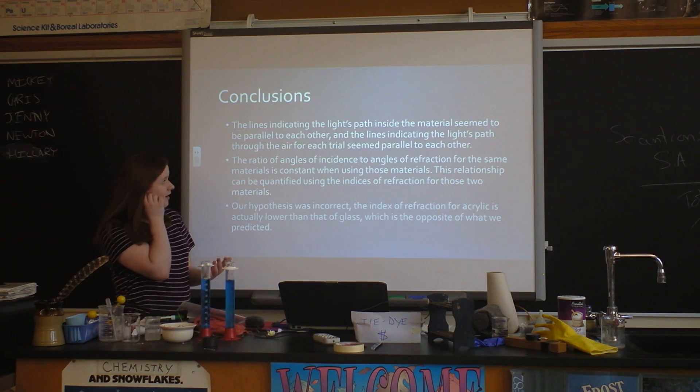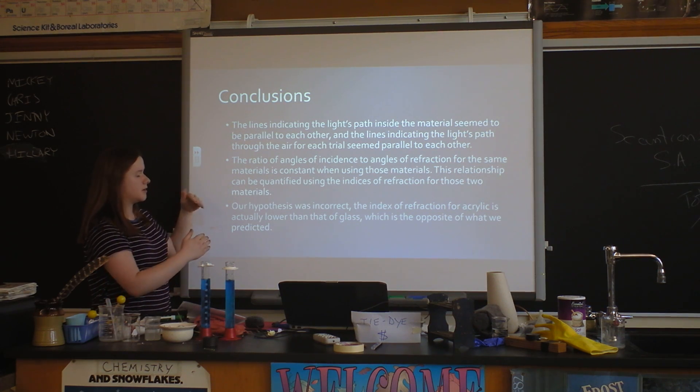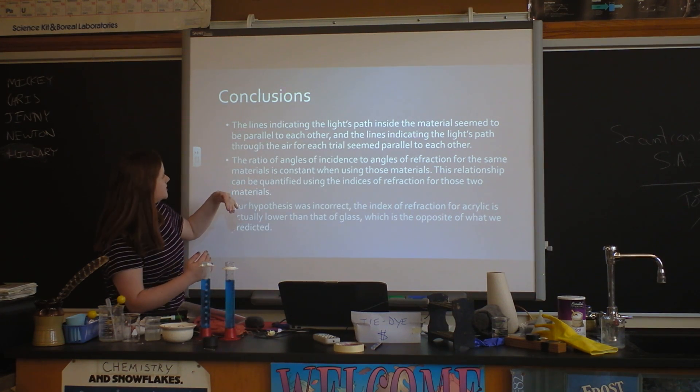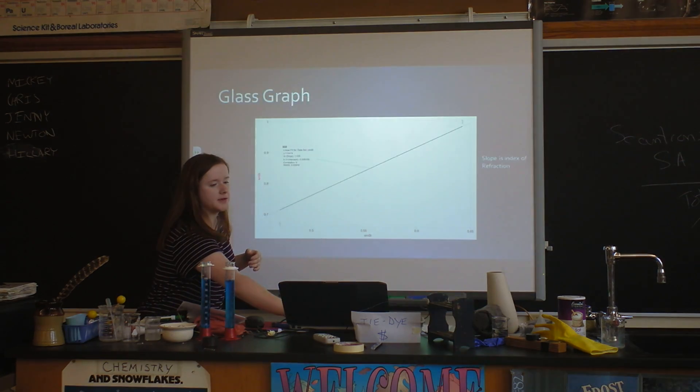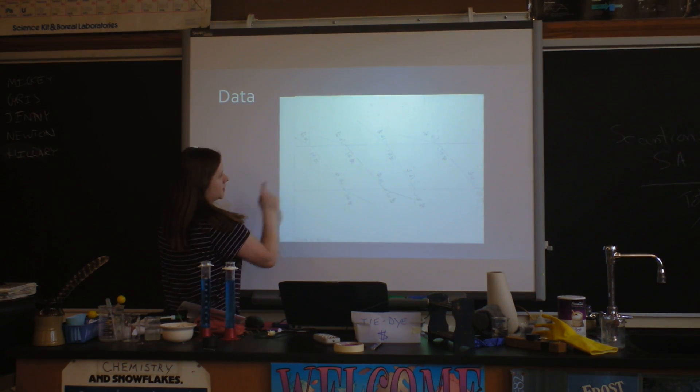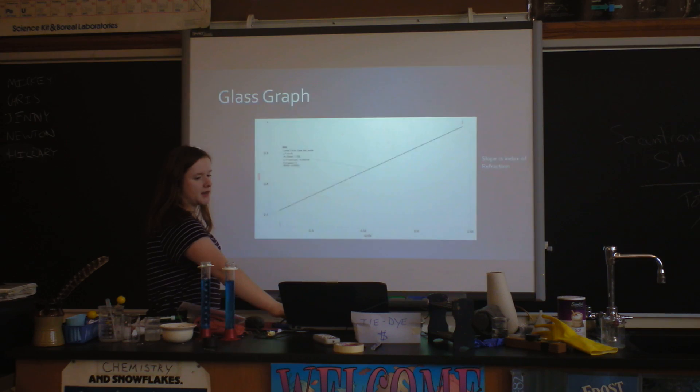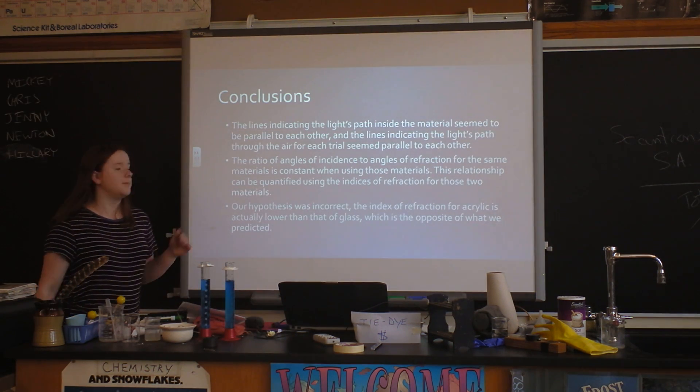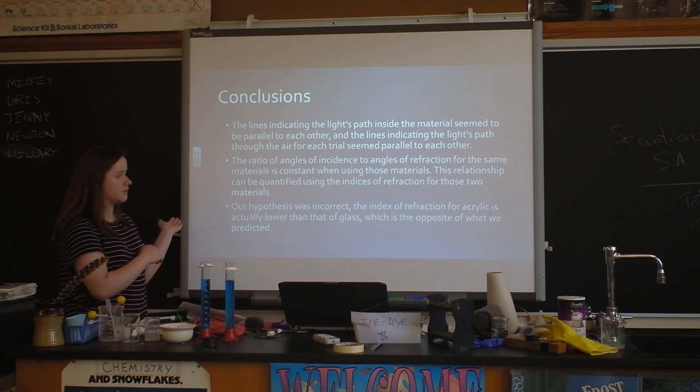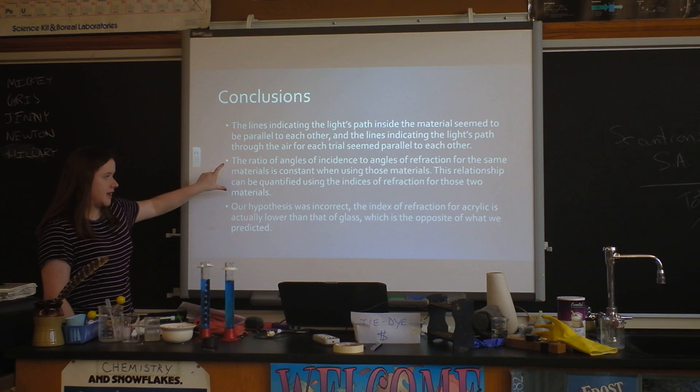So basically the lines that were through the material - every line through the same material looked to be parallel to all the other lines. I can go back - these lines all look pretty parallel to each other, and these two lines look parallel to each other, and that kind of thing. So we were thinking that light travels the same way through the same material. And we said that the ratio of the angle of incidence and refraction were the same, which is basically just saying that Snell's law was right, and that's good.